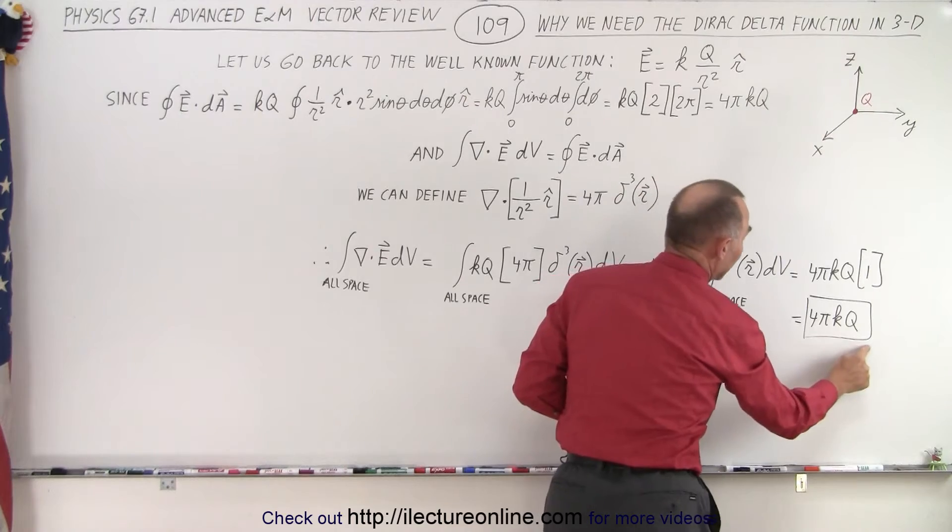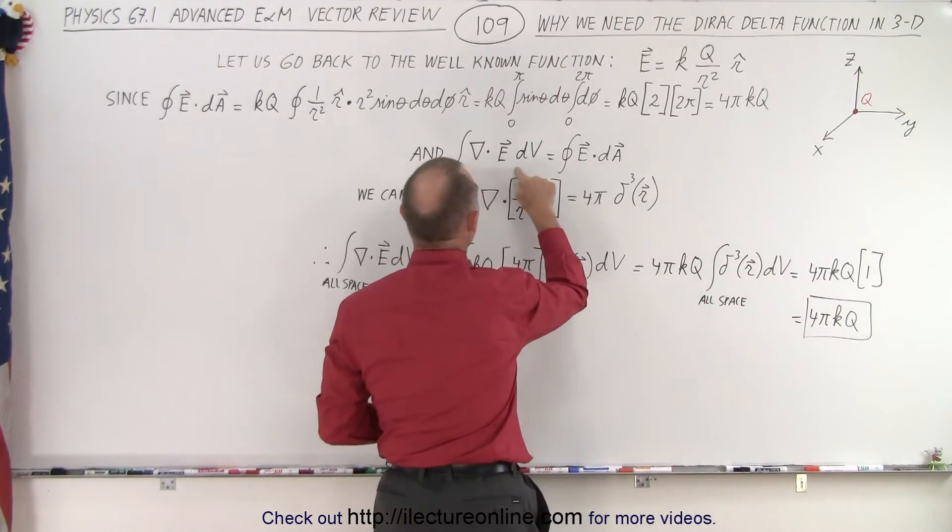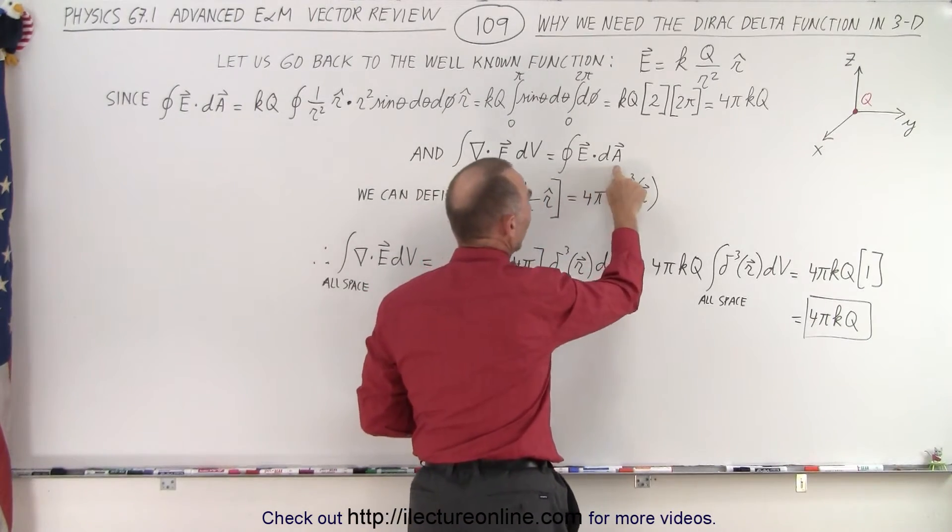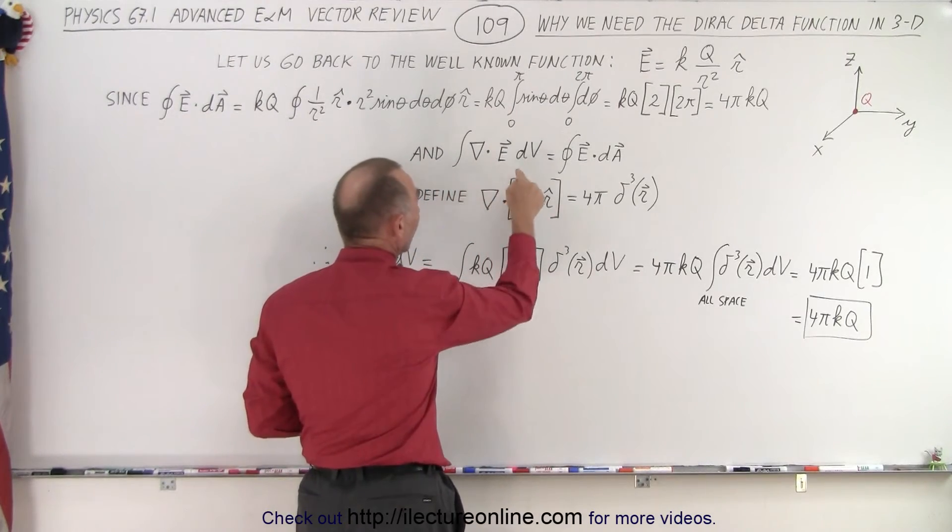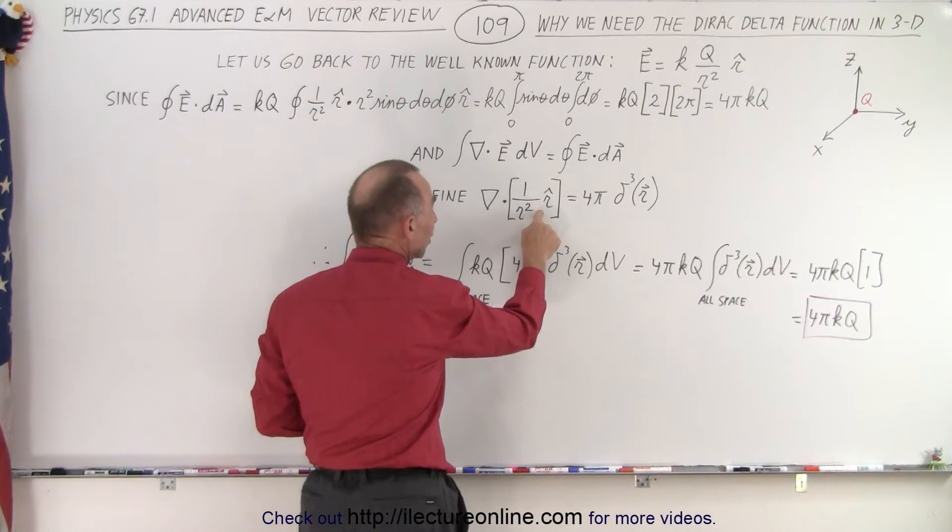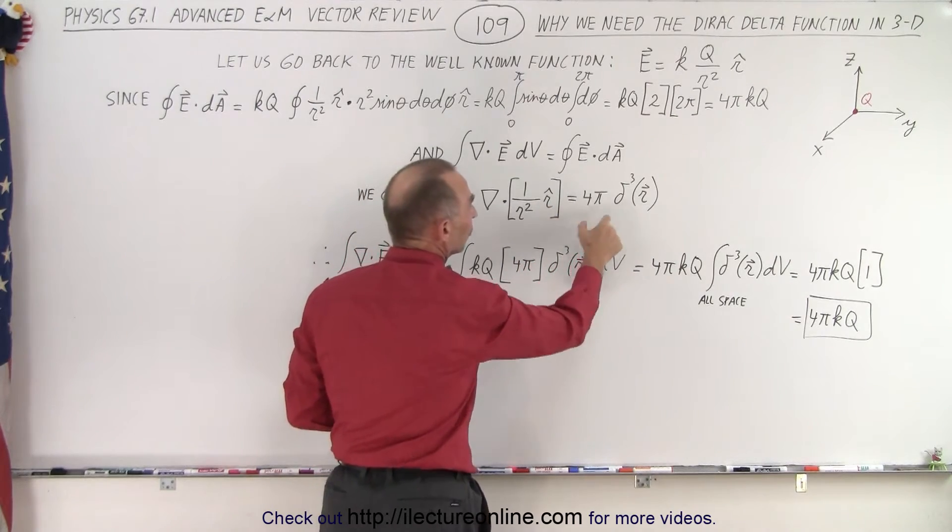So now you can see that the result we get on the left side over here is exactly the same of what we got on the right side. How did we do that? By simply defining that the gradient of 1 over r squared in the r direction is simply equal to 4π times the delta function.